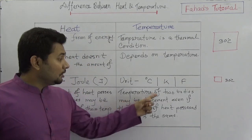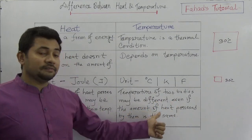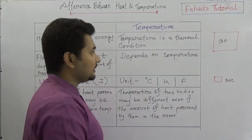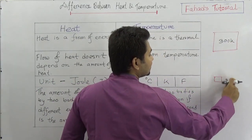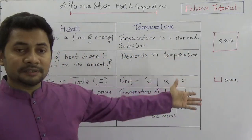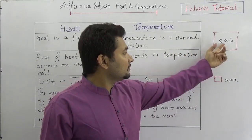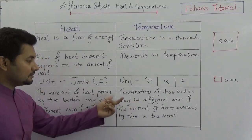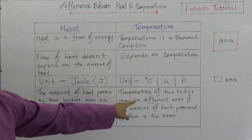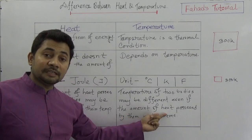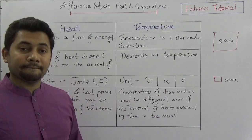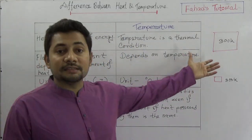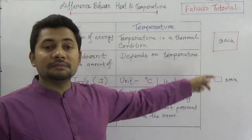Conversely, the temperature of two bodies may be different even if the amount of heat possessed by them is the same. For example, if one body is at 300 Kelvin and another is also at 300 Kelvin, the temperature may be the same but the amount of heat they possess may not be the same. So both cases hold: same temperature does not mean same heat, and same heat does not mean same temperature.